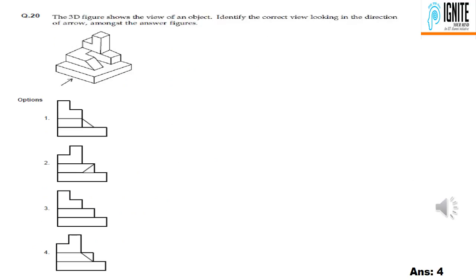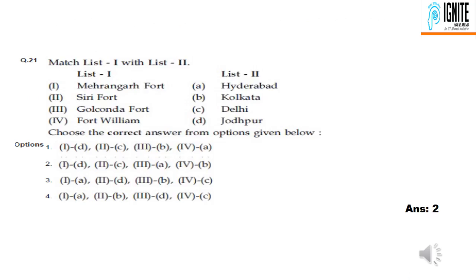Question 20: we have a front view, and the best option is option 4. Question 21 asks to match List 1 and List 2 — we have 4 items in each list. Best option is option 2. Question 22: we have a front view, and the best option is option 2.